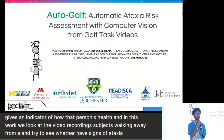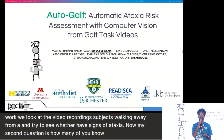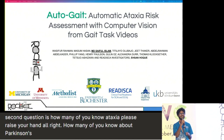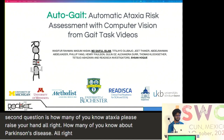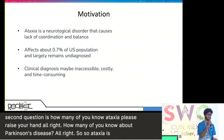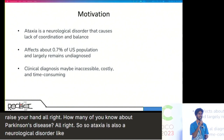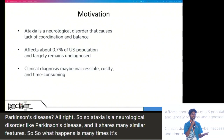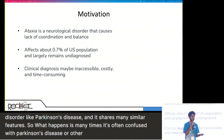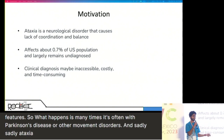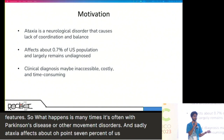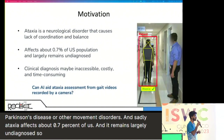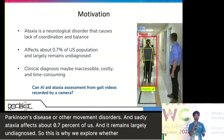How many of you know about ataxia? How many of you know about Parkinson's disease? Ataxia is also a neurological disorder like Parkinson's disease, and it shares many similar features. Many times it's often confused with Parkinson's disease or other movement disorders. Sadly, ataxia affects about 0.7% of the US population and it remains largely undiagnosed. This is why we explore whether artificial intelligence can help us assess ataxia symptoms.